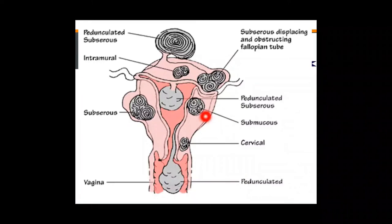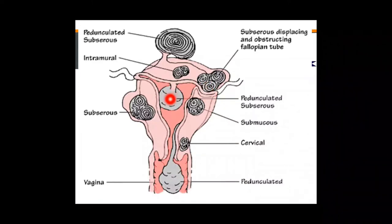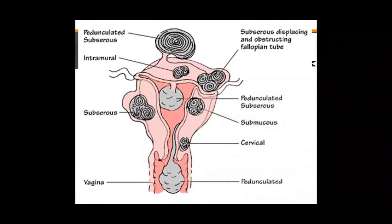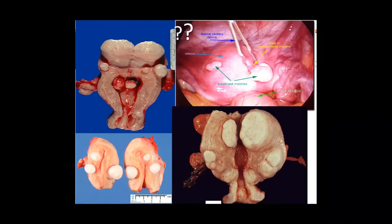This picture illustrates the different types of leiomyomas by anatomical position: pedunculated subserous, subserous (also obstructing the fallopian tube and potentially causing infertility), submucosal pedunculated, submucosal, cervical (in the cervix), and subserous. There are also different laparoscopic and cross-sectional images showing submucosal, subserosal, and intramural fibroids.